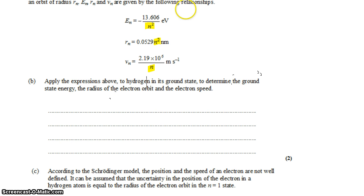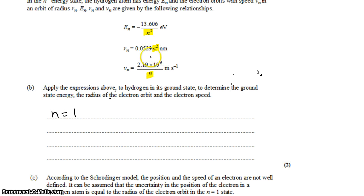We're first asked to apply the expressions above to determine the ground energy, radius, and speed of the electron. So that's when n is 1, when we're on the first shell, the ground shell. And you'll notice in each of these equations, if n is 1, it has no effect. Dividing by 1 squared has no effect. Multiplying by 1 squared has no effect. Dividing by 1 has no effect.